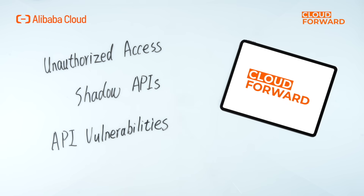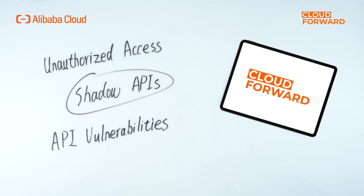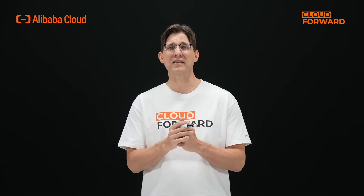In addition, with the extensive use of API interfaces, it is particularly important to protect against unauthorized access, shadow APIs, and API vulnerabilities. Therefore, the best solution is to intercept web attacks and malicious bot traffic at the network level, identify API assets and their vulnerabilities, and provide full lifecycle protection for APIs.